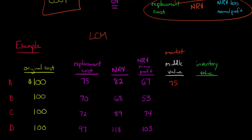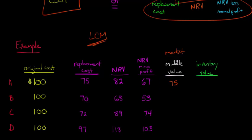Now that doesn't necessarily mean it's the inventory valuation. We still need to compare the cost and the market value — this middle value — and take whichever one is lower. The lower of cost or market: in this case, 75 versus 100, so 75 is lower. That's going to be our inventory value, and we would have a write-down. In this situation, it was the replacement cost that ended up being our market value.